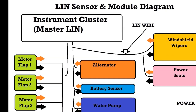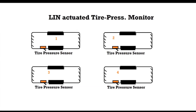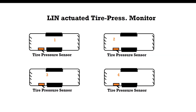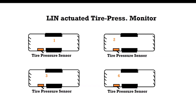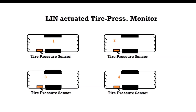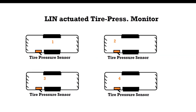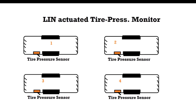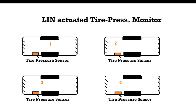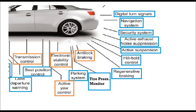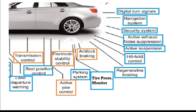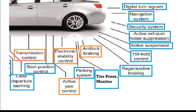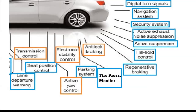Another system that uses the LIN network is the tire pressure monitoring system, whereby each wheel sends a wireless ID and transmits the actual pressure for each tire. The communication is done at around 125 kilohertz, which goes into the tire pressure monitoring module, and that module then broadcasts each tire pressure to whichever module wants to make use of it.